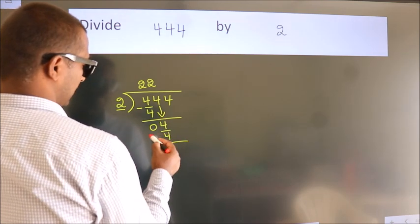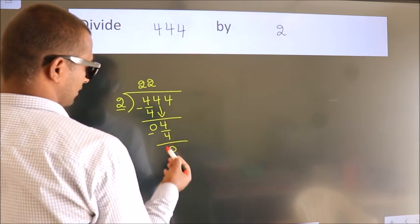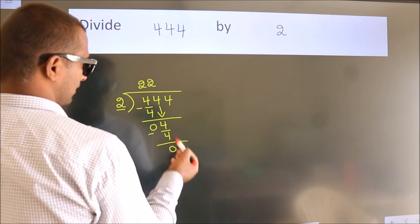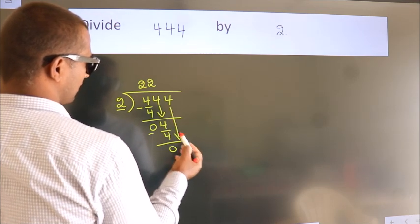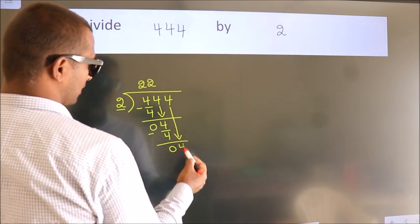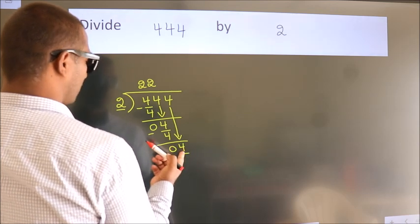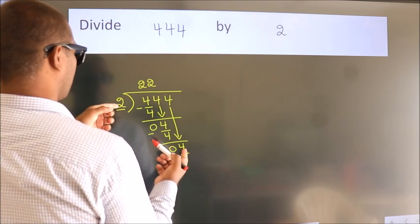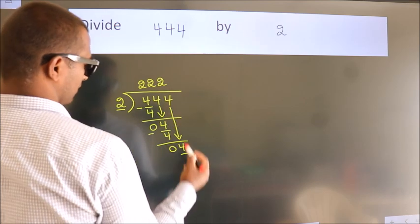Now we subtract. We get 0. After this, bring down the beside number. So 4 down, 4. When do we get 4? In 2 table, 2 twos, 4.